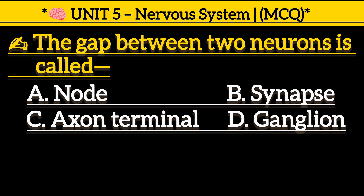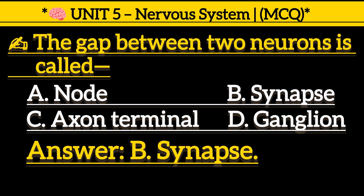The gap between two neurons is called: Option A, node. Option B, synapse. Option C, axon terminal. Option D, ganglion. Correct answer is Option B, synapse.